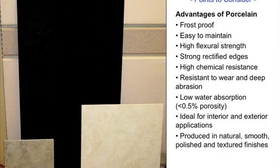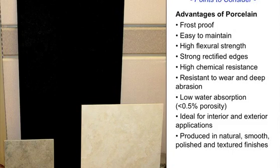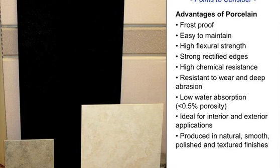Advantages of porcelain: it's frost proof, easy to maintain, has high flexural strength — meaning it'll be more resistant to movement in the substrate. It has strong rectified edges, and we'll spend time on that later. It's resistant to wear and deep abrasion. A porcelain by definition must have less than half a percent of absorption. They weigh a piece of tile, soak it in water for 24 hours, pat it dry, and weigh it again. The tile cannot have absorbed more than half a percent of its original weight. If it does, it's not porcelain — it's porcelain light. Be careful on that.